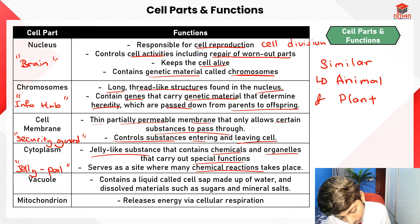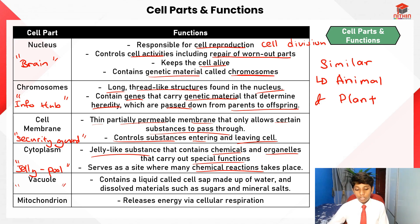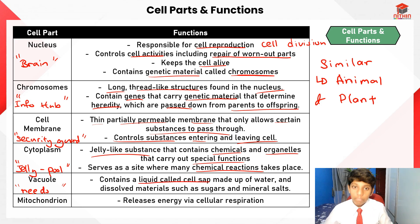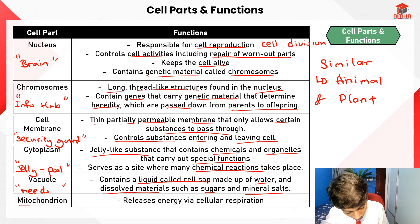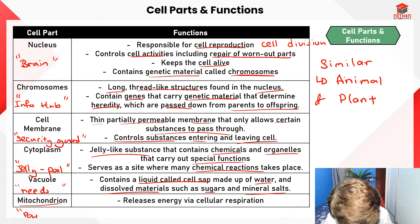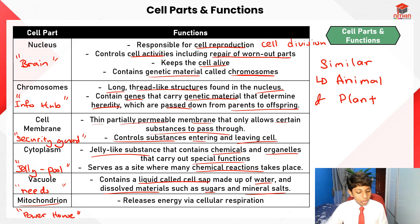The vacuole contains a liquid called cell sap made up of water and dissolved materials such as sugars and mineral salts, which are needed for the cell to survive. Lastly, the mitochondrion — the powerhouse — releases energy via cellular respiration.